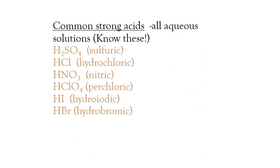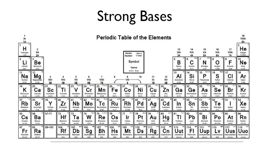The six common strong acids are: sulfuric acid (H2SO4), hydrochloric acid (HCl), nitric acid (HNO3), perchloric acid (HClO4), hydroiodic acid (HI), and hydrobromic acid (HBr). Strong bases are the Group 1 and Group 2 hydroxides — specifically lithium, sodium, potassium, rubidium, cesium, francium, calcium, strontium, barium, and radium hydroxides. For example, lithium hydroxide and sodium hydroxide dissociate completely into their metal ion and hydroxide ions. Beryllium and magnesium hydroxides are not strong bases; they are weak bases due to their smaller size.